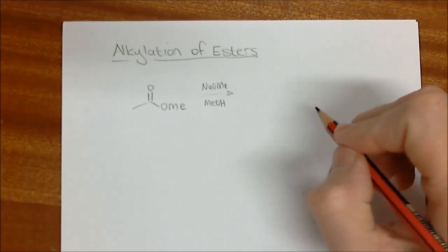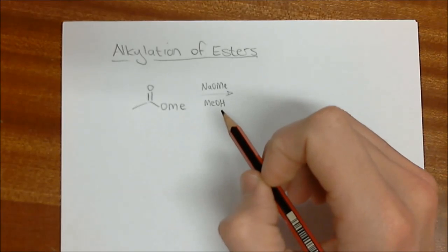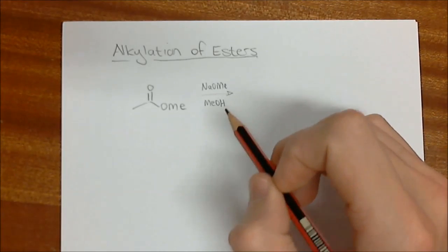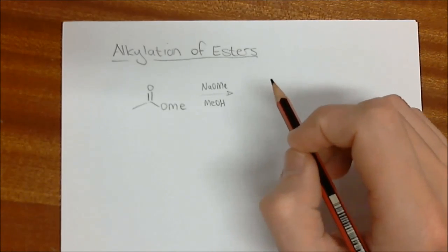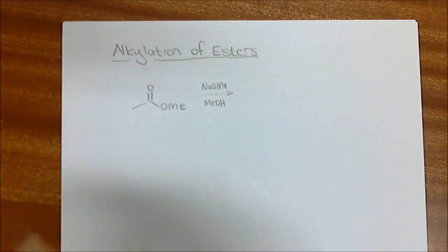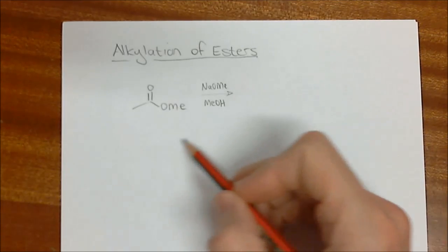We're going to be looking at the alkylation of various carbonyl compounds. In the last lecture, we finished off by looking at alkylation next to ketones, and we're going to come back to that. There's some more information that we need to deal with, but just to remind you, we've looked at formation of enolates of esters.